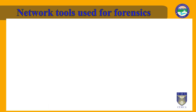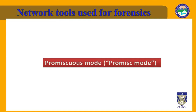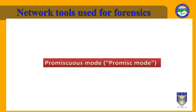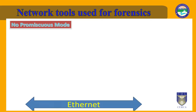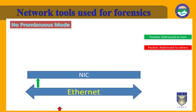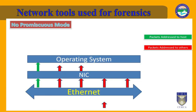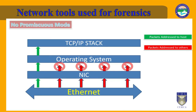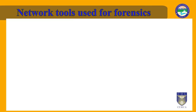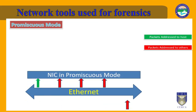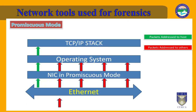Let us discuss promiscuous mode. In computer networking, promiscuous mode, often shortened to promisc mode, is a mode for a wired or wireless network interface controller that causes the controller to pass all traffic it receives to the central processing unit, rather than passing only the frames that the controller is intended to receive. This mode is normally used for packet sniffing that takes place on a router or on a computer connected to a hub instead of a switch, or one being part of a WLAN. Interfaces are placed into promiscuous mode by software bridges, often used with hardware virtualization.